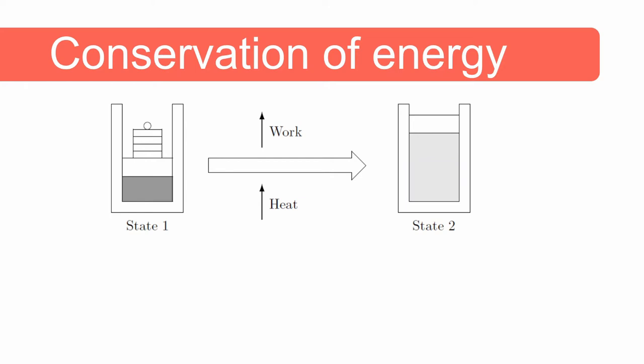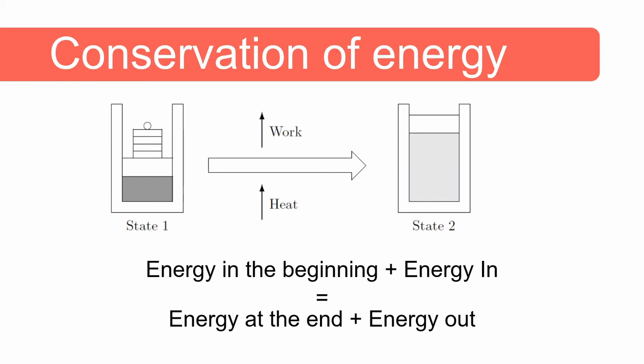As energy is conserved, the energy contained in the control mass before the process starts plus the energy added to the control mass must be equal to the energy contained in the control mass at the end of the process, plus the energy that was released or done by the control mass.